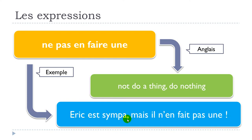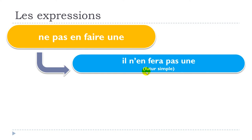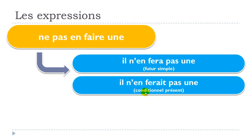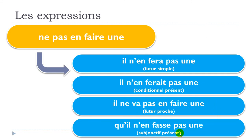Let's see how you would conjugate this expression at different tenses. Future simple: il n'en fera pas une. Conditionnel présent: il n'en ferait pas une. Future proche: il ne va pas en faire une. Subjonctif présent: qu'il n'en fasse pas une.